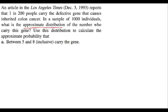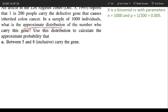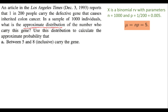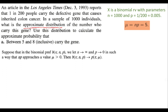But when the word 'approximate distribution' comes in, it means n is very large and it's very hard to compute using binomial distribution. If 'approximate' is not there, it is a binomial random variable with parameters n and p. But if approximate distribution is asked, there is a result that when n is very large and p is very small, np approaches a value mu. So the binomial gets approximated to a new distribution with single parameter mu, where mu equals np.